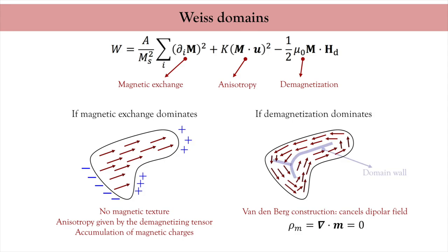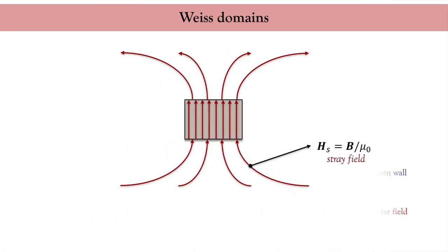Such lines are called domain walls and are the focus of the present lecture. Consider a rectangular magnet — the same magnet we looked at in the introduction. If all the magnetic moments are aligned, the magnet radiates a large stray field.